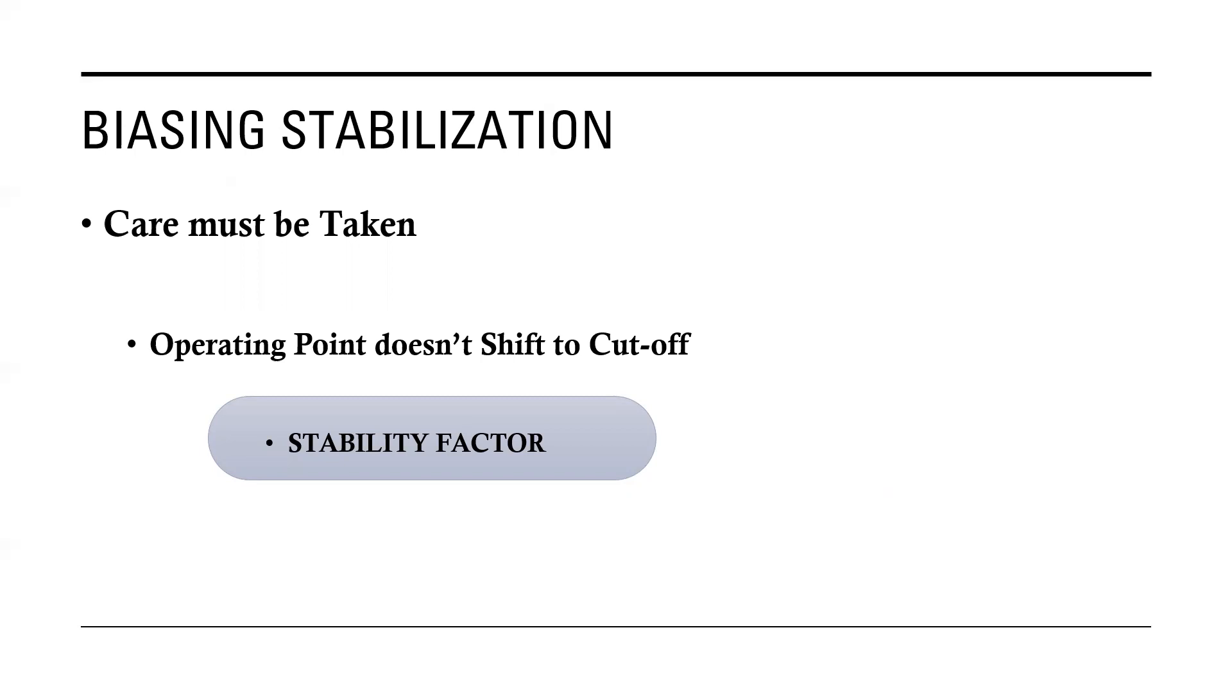The stability factor is actually a measure of stability provided by the biasing circuit. This particular stability indicates the degree of change in operating point due to variation in temperature. Ideally, stability factor should be perfectly zero to keep the operating point stable. Practically, stability factor should have a value as minimum as possible.